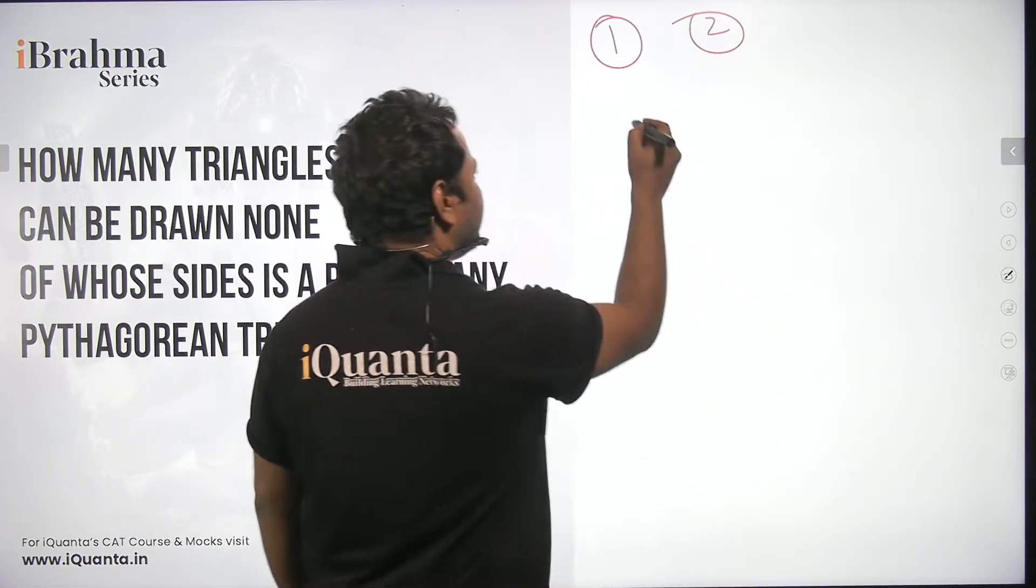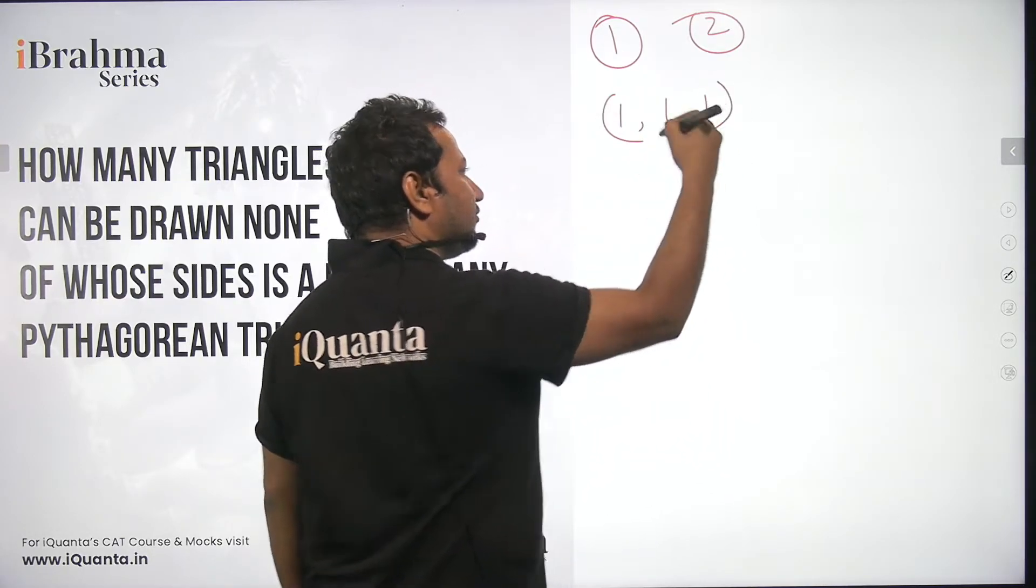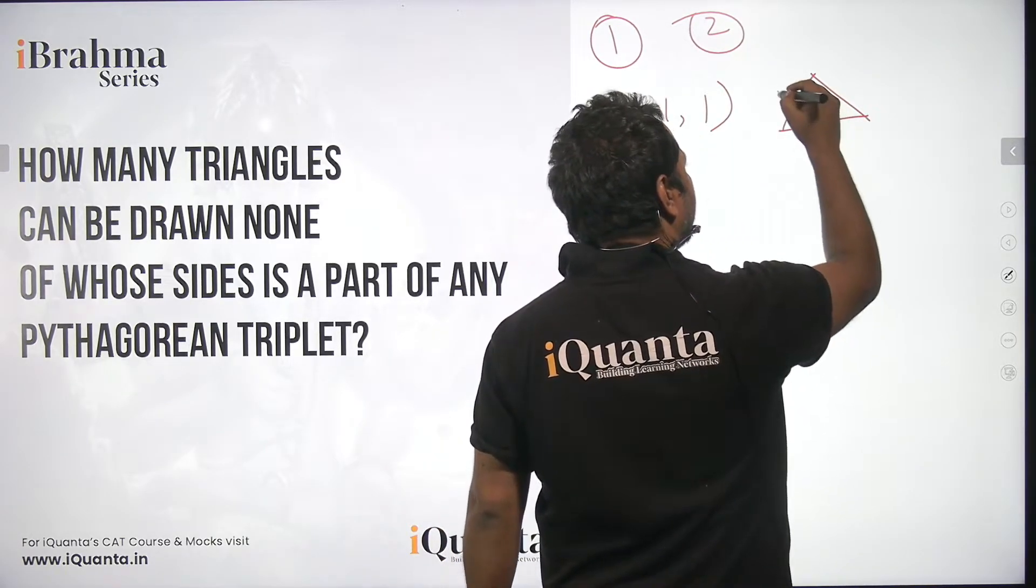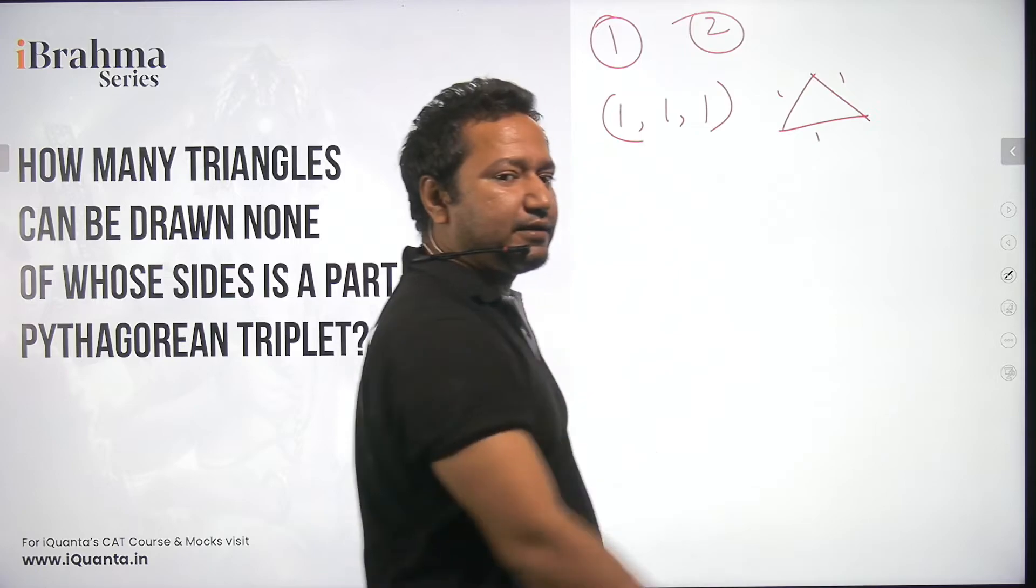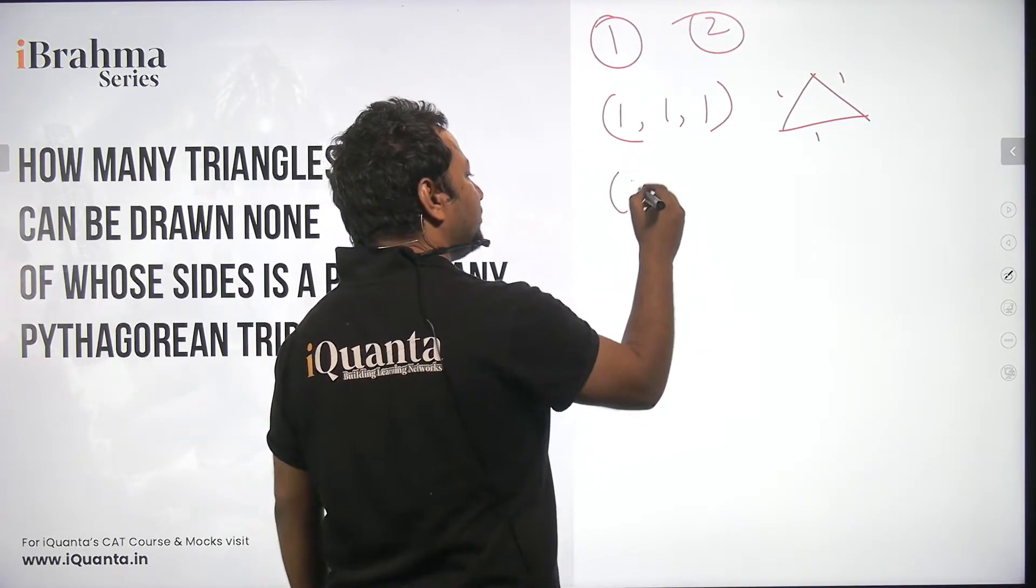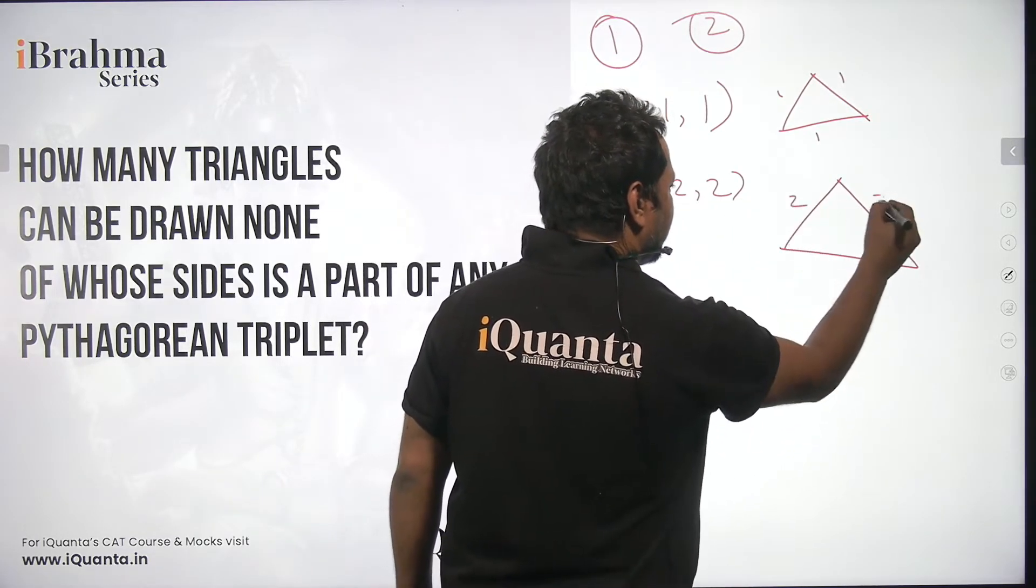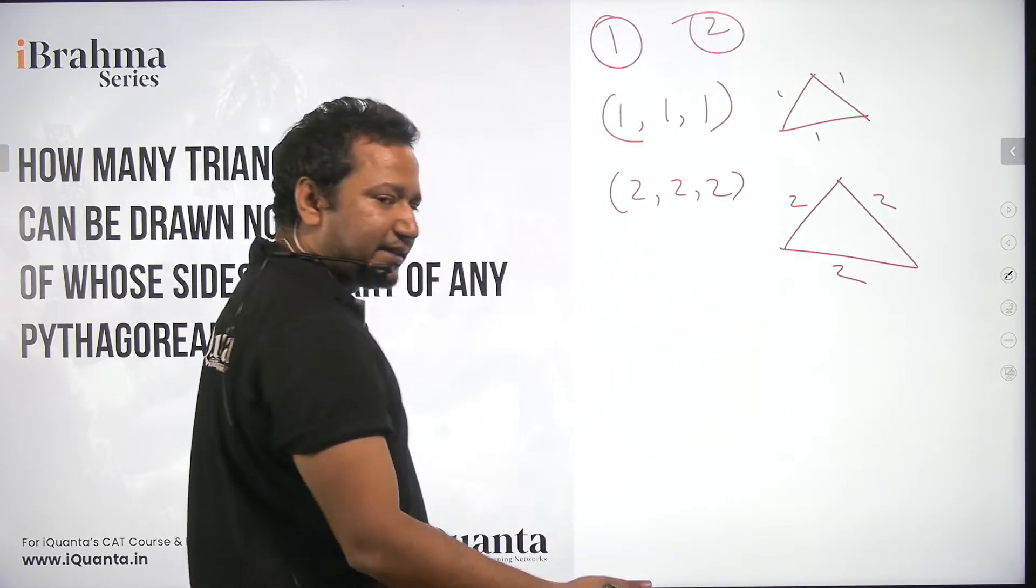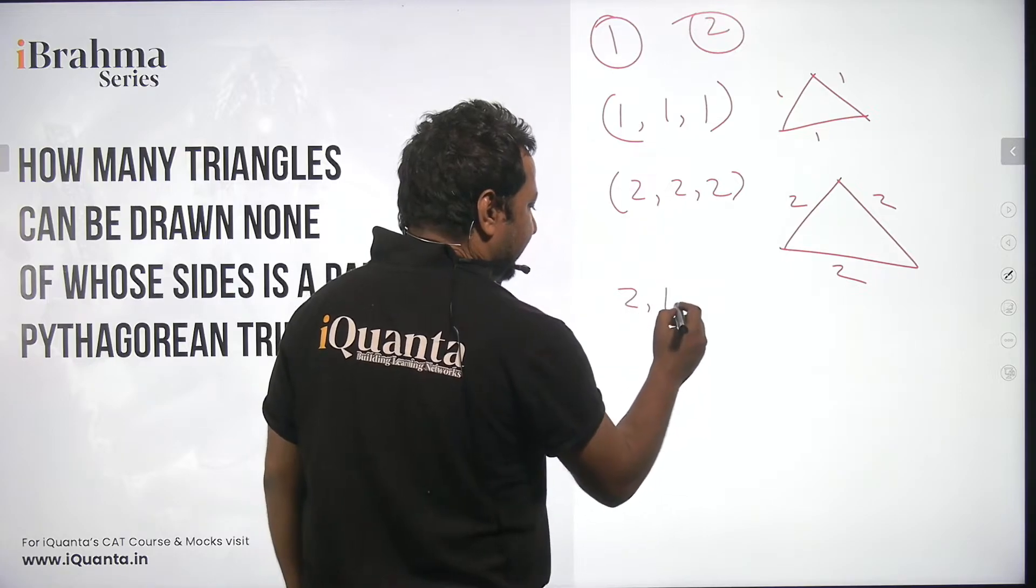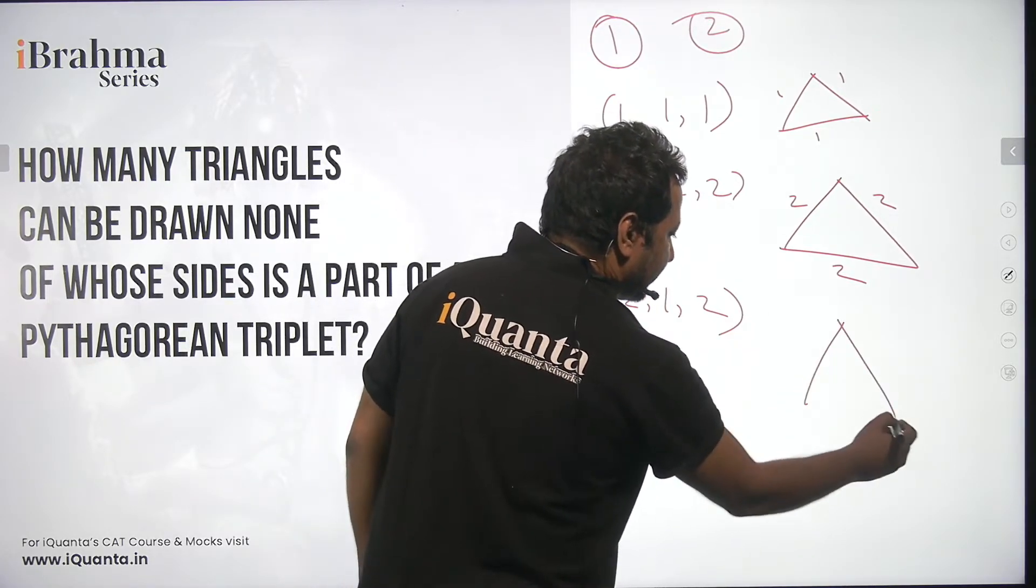If the side is 1, you can form an equilateral triangle 1, 1, 1, that is a possibility. So neither of the sides here is a part of any Pythagorean triplet. Similarly if you assume 2 you can get 2, 2 and 2. Again none of the sides of this triangle is a part of any Pythagorean triplet. And if we mix 1 and 2, combine 1 and 2, what do we get? Get a triangle whose sides are 2, 1, 2. That is a possibility.